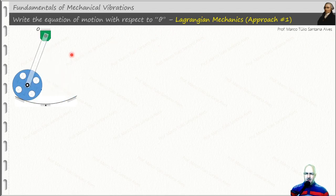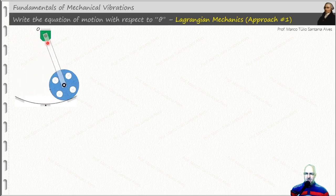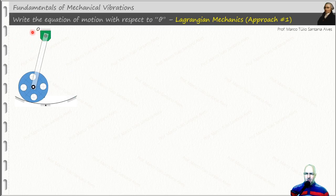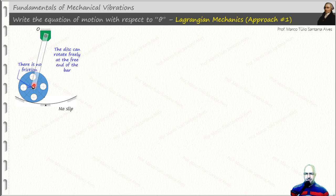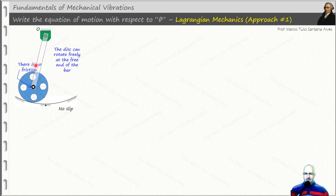That's the system we are studying today. It's composed by a homogeneous bar with its pivot at O, with a disc connected to its free end rolling on a cylindrical track. There is no slip. There is also no friction at the free end, meaning the disc can rotate freely at the free end of the bar. From this information, we conclude that as a rigid body, the disc does not contribute to the system. However, the disc contributes as a mass point — just a mass point.